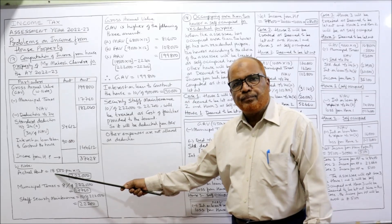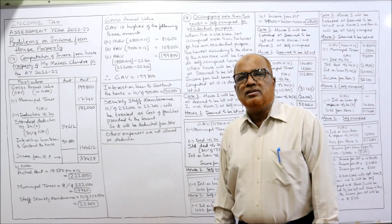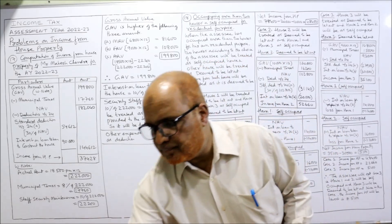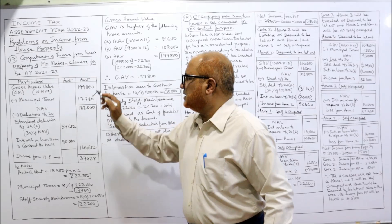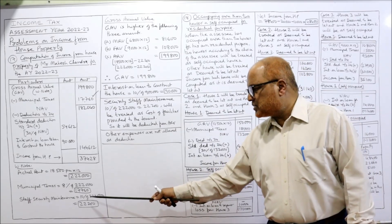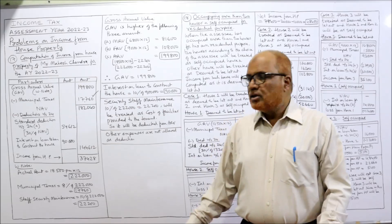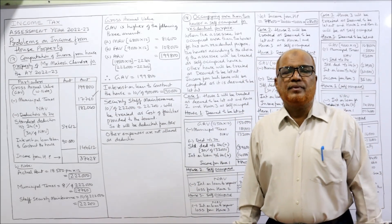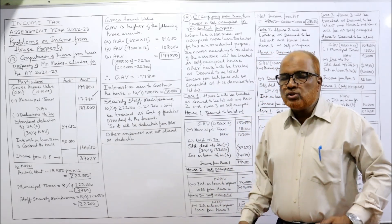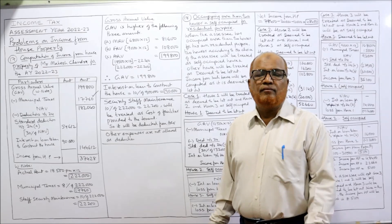The actual rent is 18,500 per month × 12 = 2,22,000. On this actual rent received, 8% are the municipal taxes: 8% of 2,22,000 = 17,760. Staff security maintenance is 10% of rent received: 10% of 2,22,000 = 22,200. This staff security maintenance is a service provided by the owner, so 22,200 should be deducted in calculating ARV. The owner is not making any service charges to the tenant — only the service is being provided without taking any money.